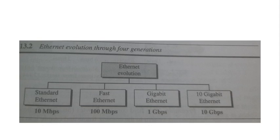First is the Standard Ethernet, which has a maximum bandwidth of 10 MBPS. The next one is the Fast Ethernet with 100 MBPS. Next is the Gigabit Ethernet, which has a bandwidth of 1 GBPS. And the fourth one is 10 Gigabit Ethernet with 10 GBPS bandwidth.